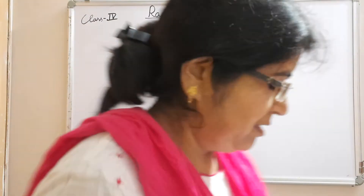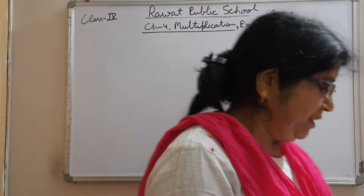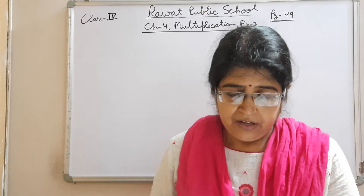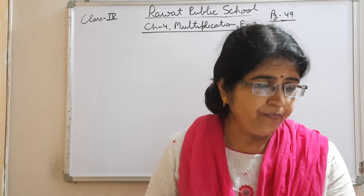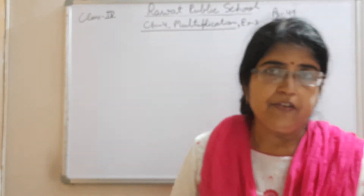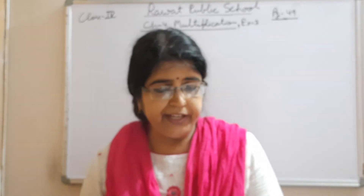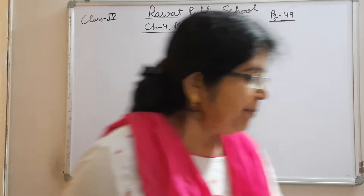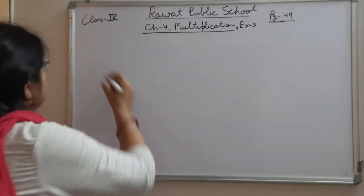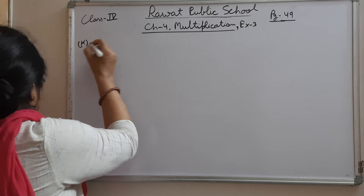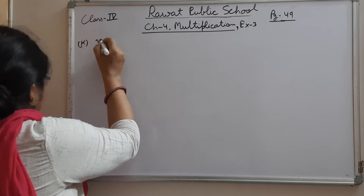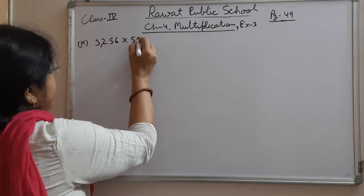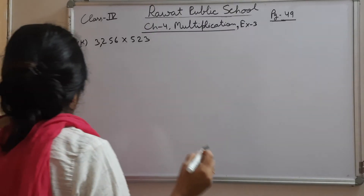Good morning students. This is our Chapter 4 on multiplication. Yesterday we completed Exercise 3, questions A to J. Now we will start from question K of question 1. In K, we have 3256 × 523.